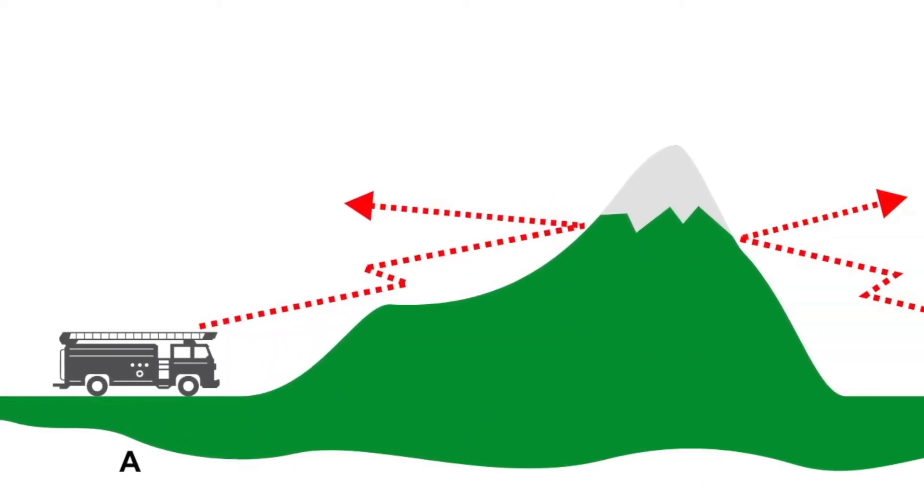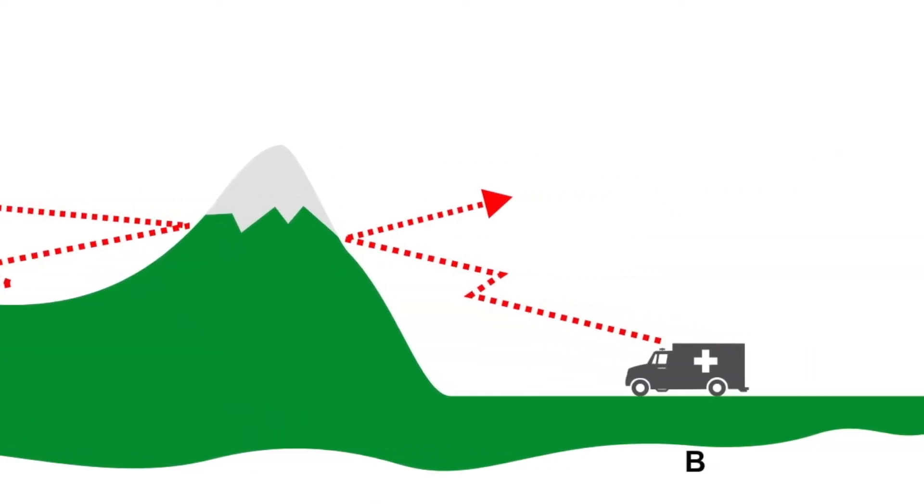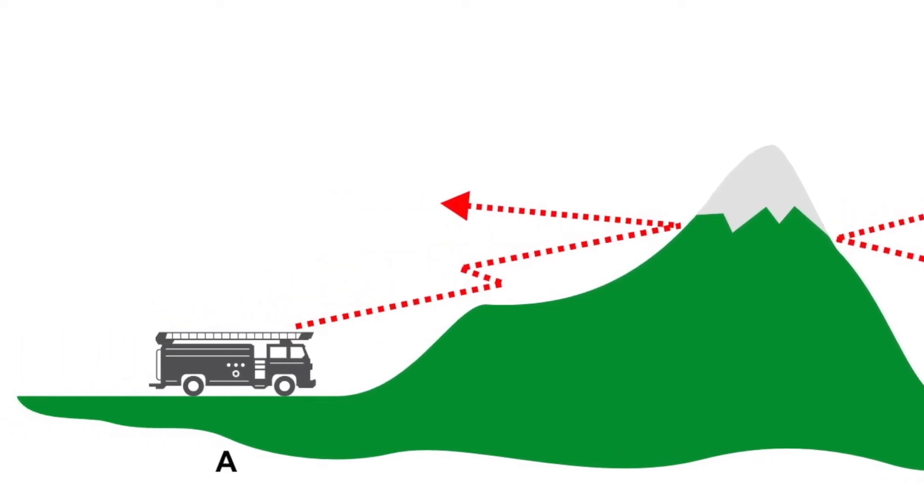What happens if there's a hill or a big building in the way? There's no line of sight. It's blocking the radio.